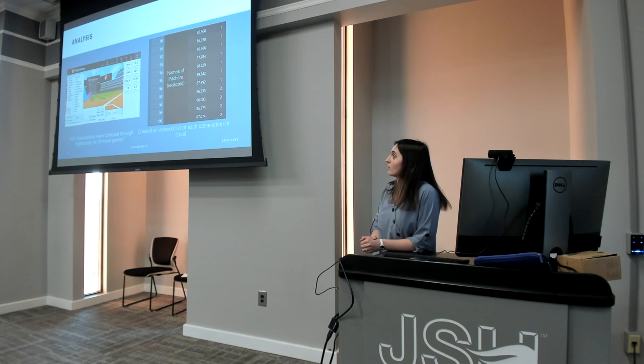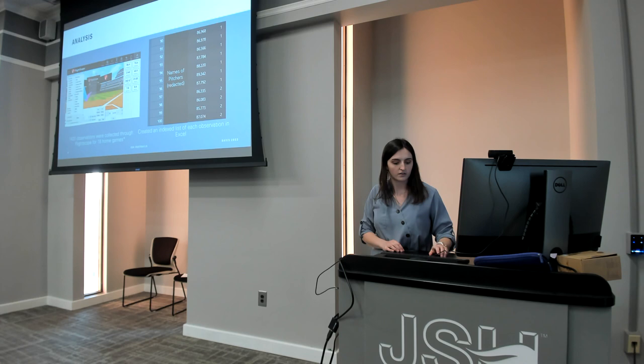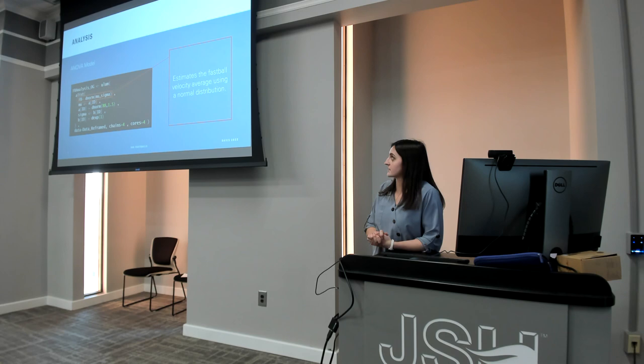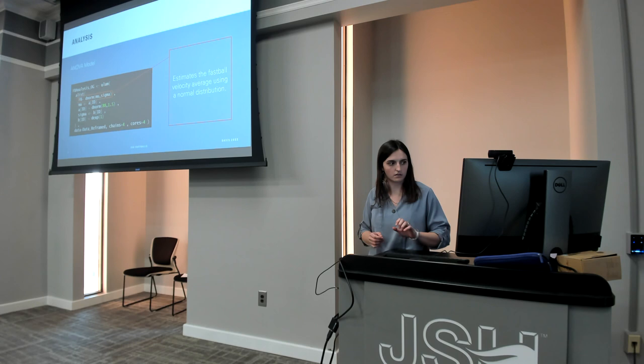We got 1,431 observations, which is plenty enough for what we needed to do. I created a list in Excel of each observation. I had the pitchers' names, which I did not include here, but I made an index for each — so if it was John Smith, I named him one; if it was Billy Joe, I named him two. In R, which is the coding language we used in Dr. Cleveland's class, I created an ANOVA model. With this model I wanted to estimate the mean of the team's fastball velocity, using a normal distribution.